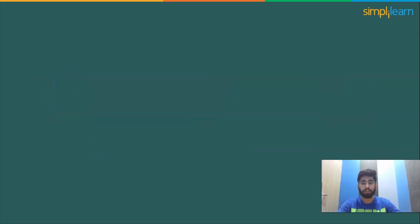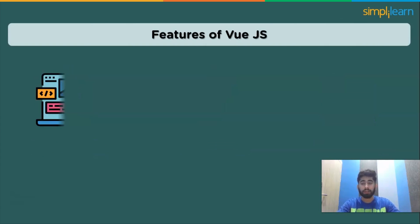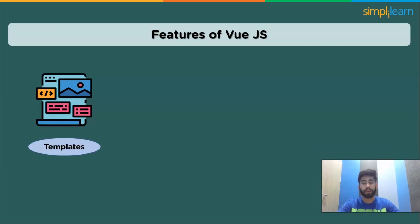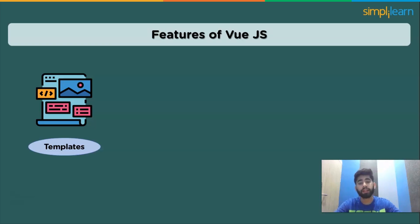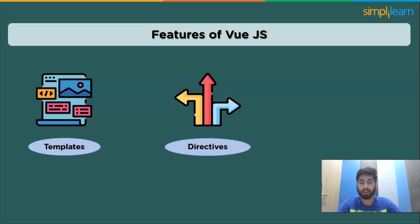The next feature is templates. Vue.js provides HTML-based templates that connect the data from the Vue.js instance to the DOM. The templates are converted into simulated DOM render functions. Web developers can also use render functions and swap out the template for the render function if needed.